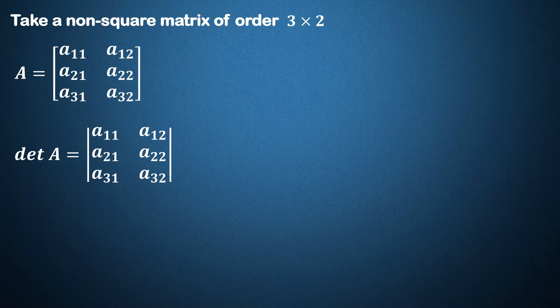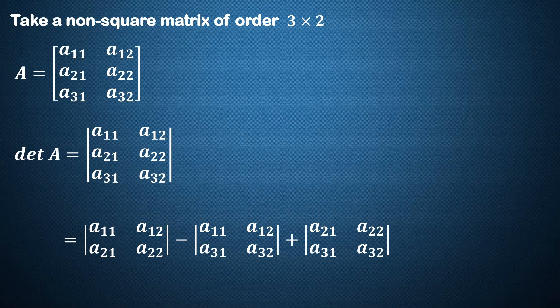This determinant is expanded as, let me explain. Here row 1 is associated with row 2, then row 1 is associated with row 3, and then row 2 is associated with row 3.